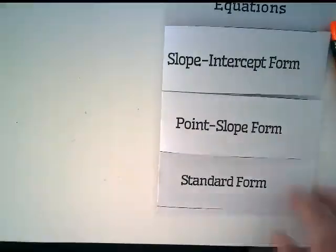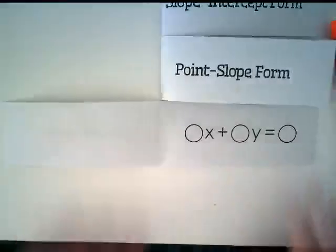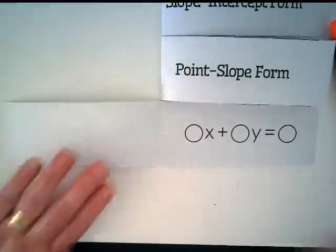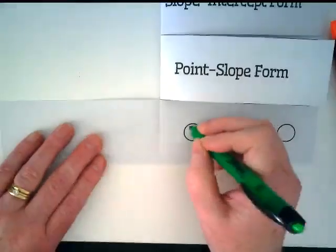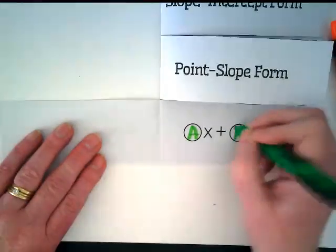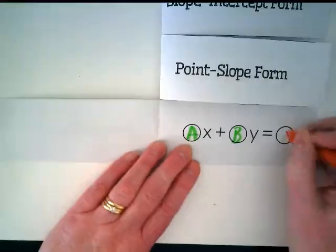And the last one is standard form. It's my second favorite. You do get favorites with these. Standard form is Ax plus By is equal to C.